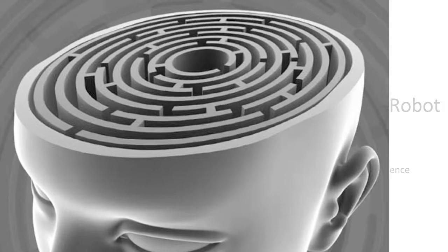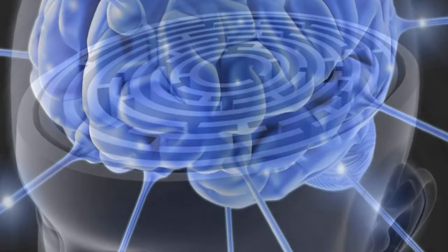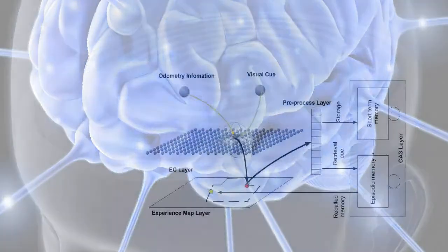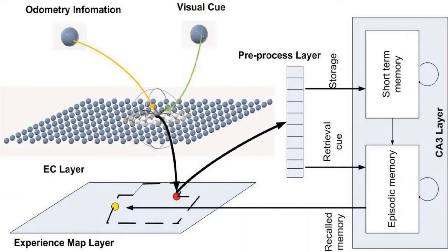Spatial navigation is a very important cognitive ability in brain-like intelligence. We propose a brain-based system to enable a robot to perceive, act, and navigate.